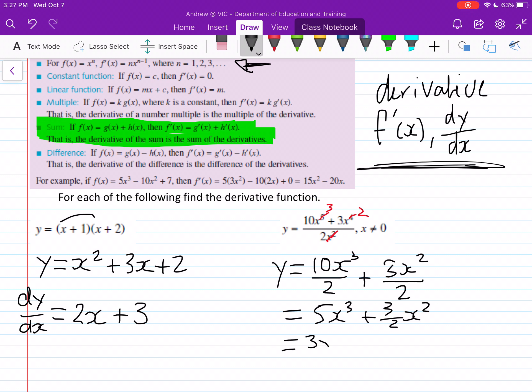So this becomes 3 times 5x to the power of 2, plus 3 over 2 times 2x to the power of 1, which is just x. So I'll leave that there.